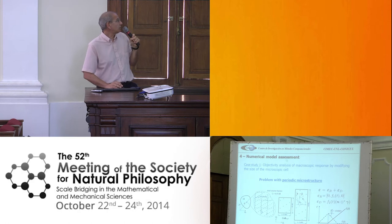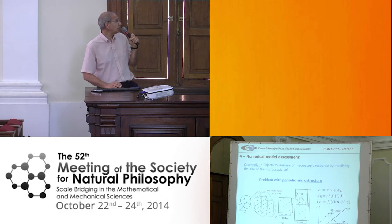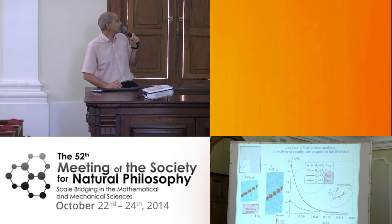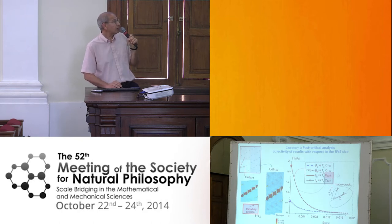We have validated the model through three case studies. In the first case, we analyzed the objectivity of the model with respect to changing the size of the RVE. I used a periodic microstructure loaded with a given strain history and solved it for two different cells: a one-by-one cell and a one-by-two cell, which is double the initial cell. I plotted the homogenized traction vector at the macro scale provided by our model — the normal component and, in blue, the shear component of the traction — and we can see that the solutions obtained with the two micro-cells are practically indistinguishable.